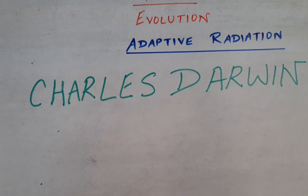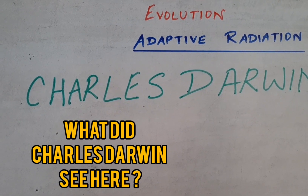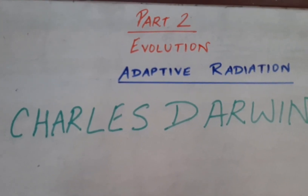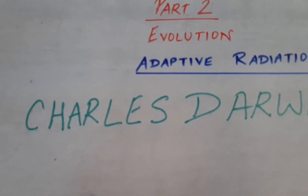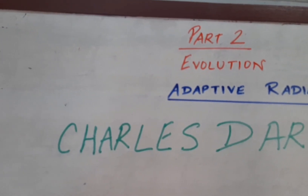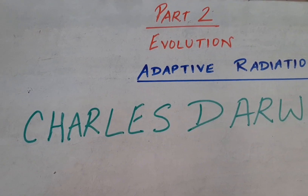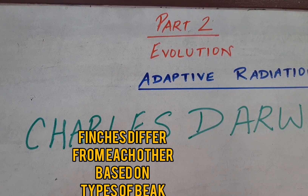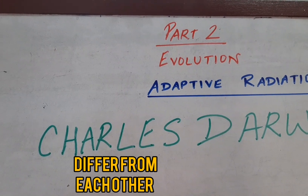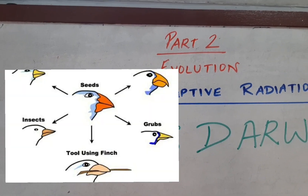When Darwin went to these islands, he saw that there are at least 26 different types of finches present across the various islands. These finches were different from each other based on their beaks. He observed that the variety of food these finches consumed was different from each other, and that is the reason why the beaks are so different across all these species.